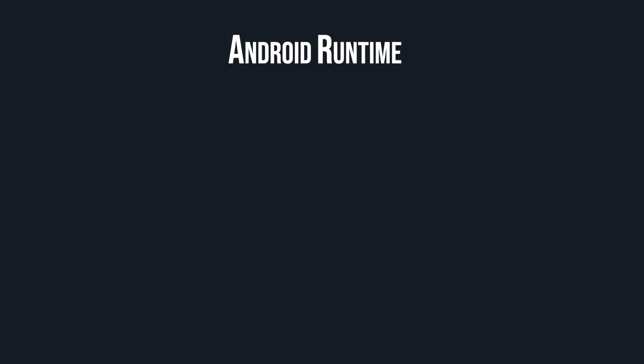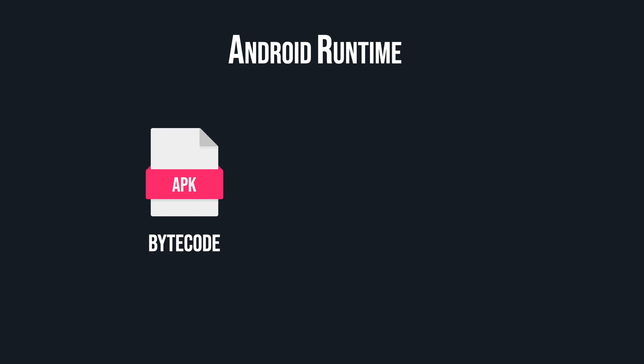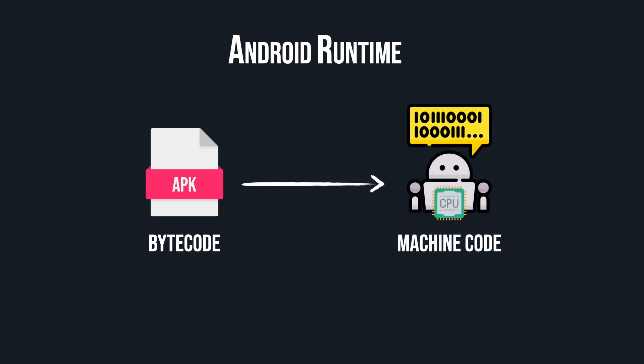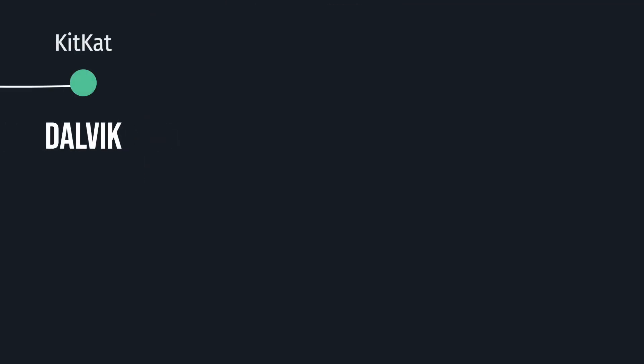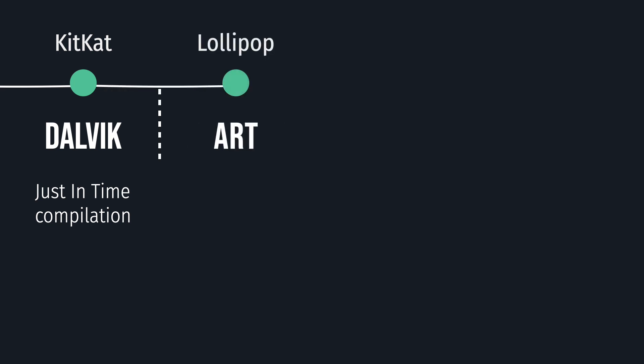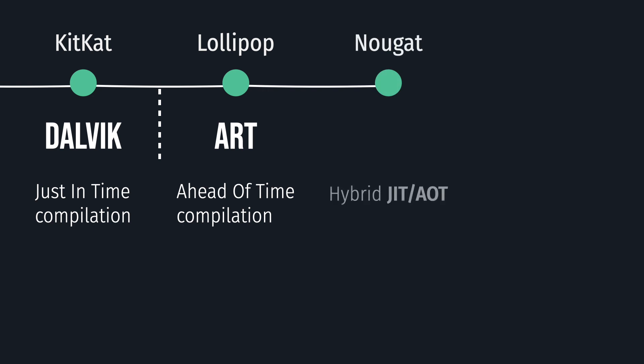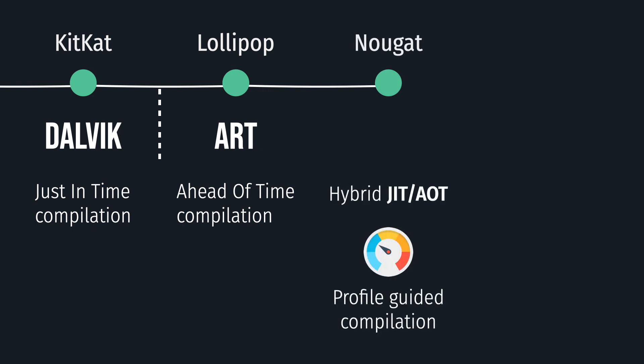So to quickly sum up: Android Runtime is responsible for compiling bytecode, which is part of an APK, into device-specific machine code that can be understood directly by the CPU. The first Android Runtime implementation was called Dalvik, which used just-in-time compilation to optimize RAM usage, which was very scarce at the time. In order to improve performance in Android L, ART was introduced, which used ahead-of-time compilation. That allowed achieving better runtime performance, but caused longer installations and more RAM usage. That's why in Android N, JIT was introduced back into ART, and profile-guided compilation allowed achieving better performance for the parts of code that were frequently run.